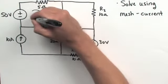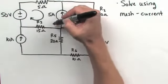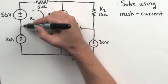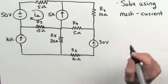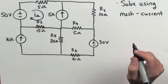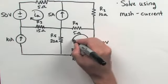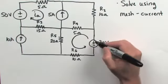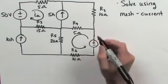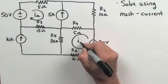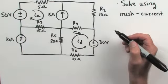In this mesh, since the positive supply starts right here, we'll assume that current flows from the positive supply around the mesh to the negative side of the supply. We'll call this mesh current I sub A. For the next mesh, we'll again assume that current flows from the positive side of the power supply to the negative side, and call this mesh I sub D, recognizing that we have four meshes.